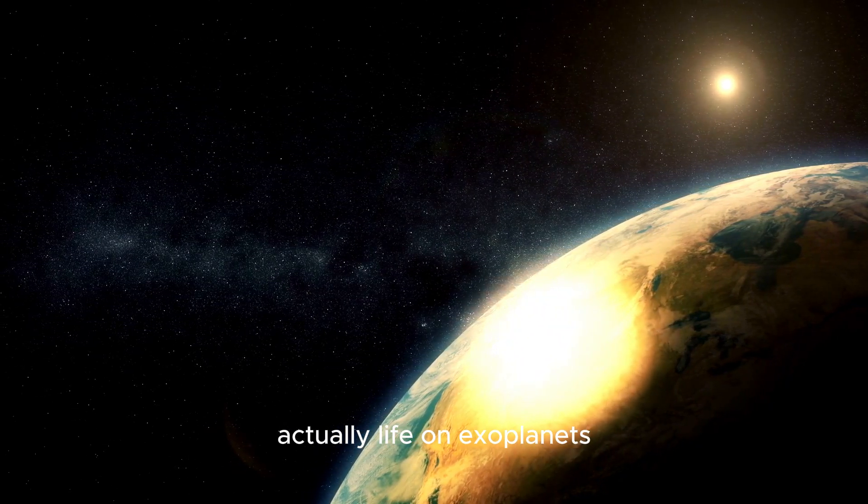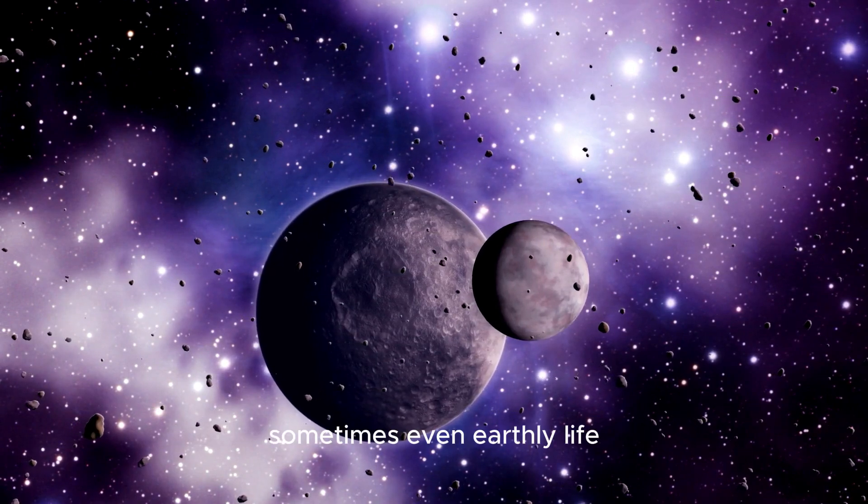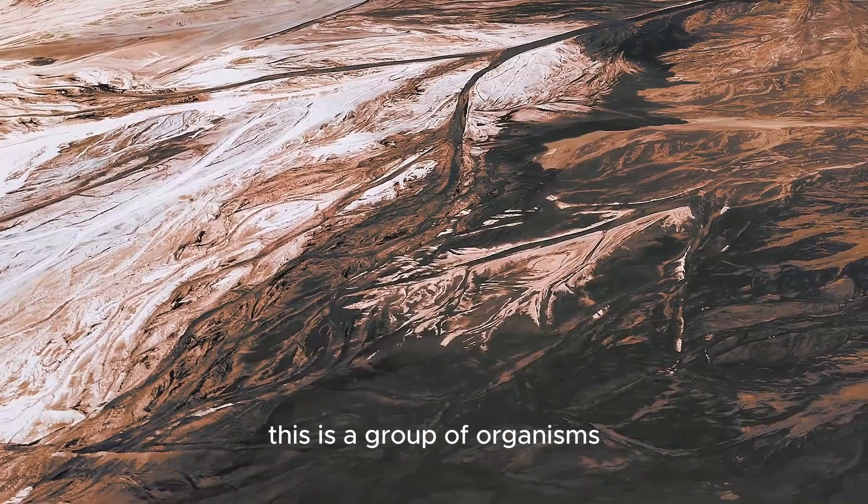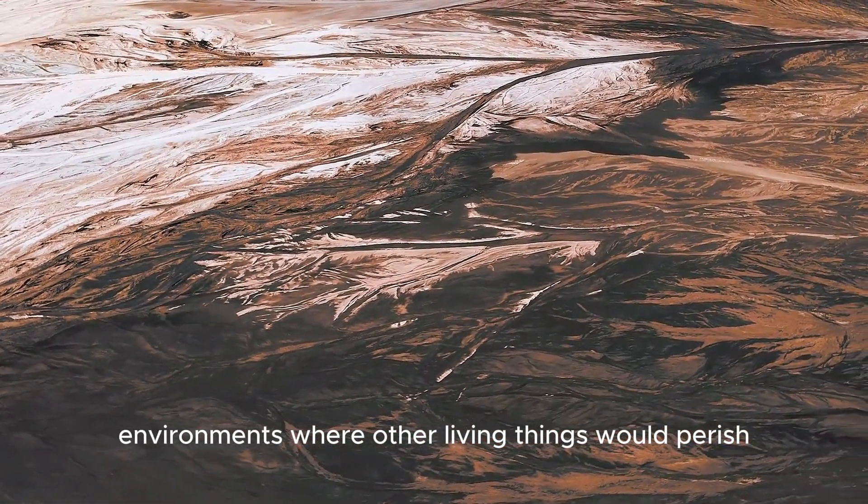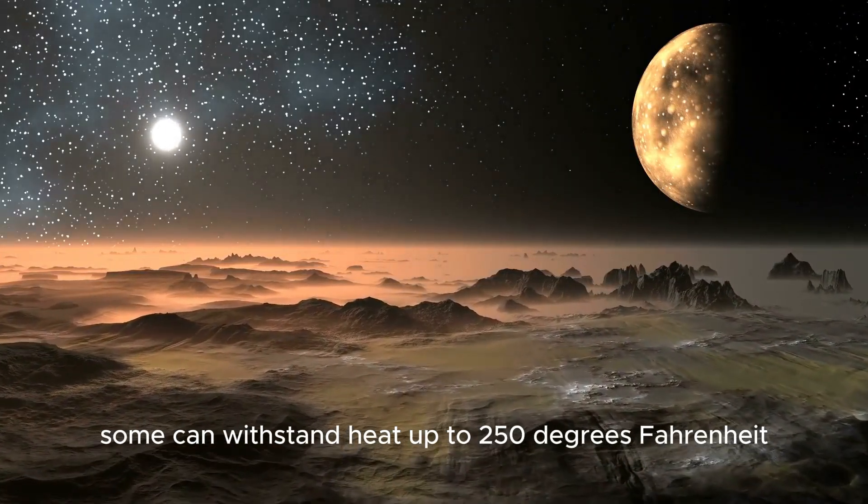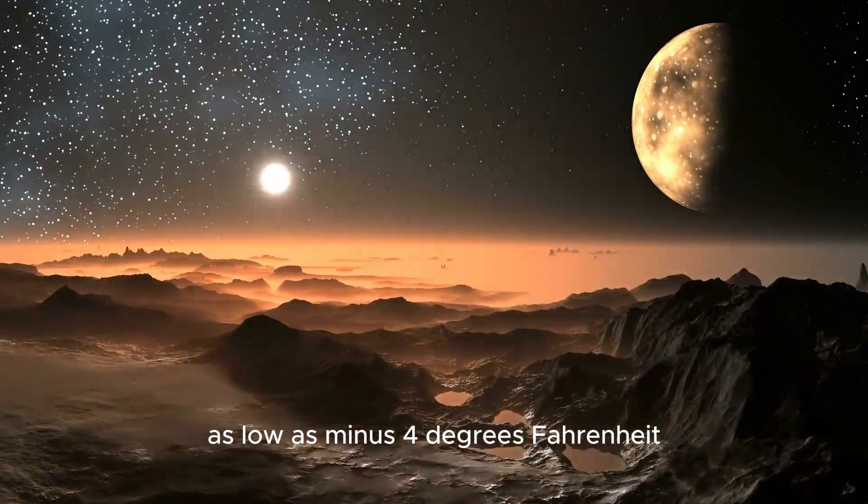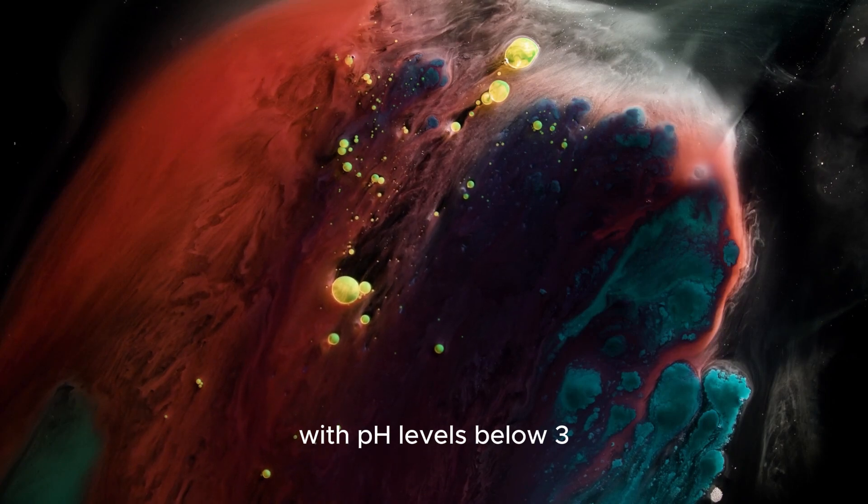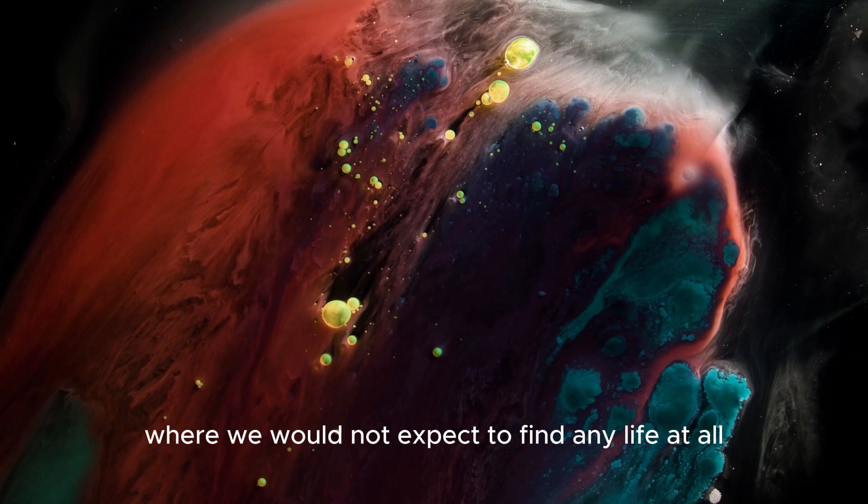Actually, life on exoplanets might not even remotely resemble life on Earth. Sometimes even earthly life like extremophile species can seem alien. This is a group of organisms, primarily bacteria, that can endure environments where other living things would perish. Some can withstand heat up to 250 degrees Fahrenheit. Some can withstand colds as low as minus 4 degrees Fahrenheit. Some of them can survive in strong acids with pH levels below 3, while others can be found on Earth in places where we would not expect to find any life at all.